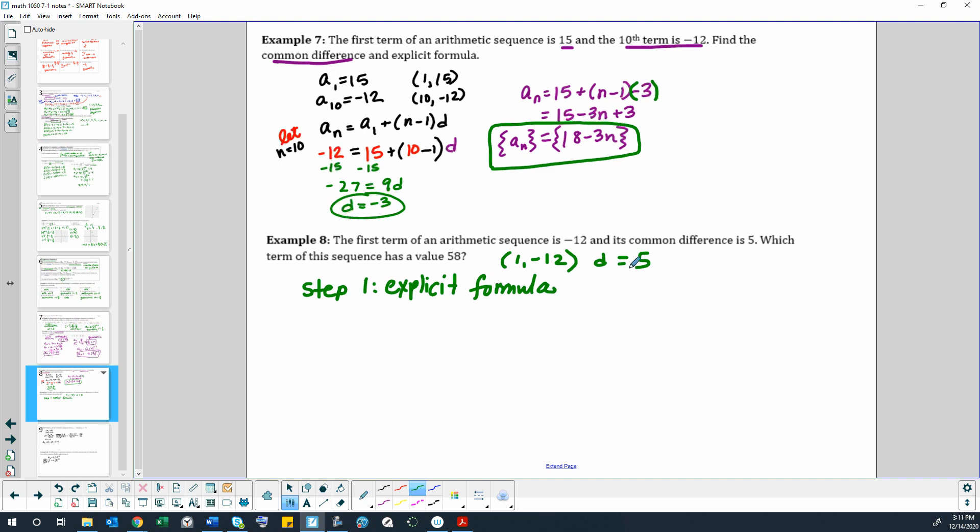So to do that, I already have d. I'm just going to use my formula: a sub n equals a sub 1 plus n minus 1 times d. So that's going to give me, a sub 1 was negative 12, so negative 12 plus 5n minus 5. So that'll be 5n minus 17. So there's the formula we can use. Now we want to figure out which value is going to be equal to 58.